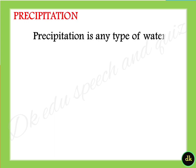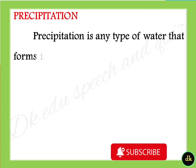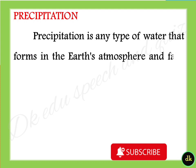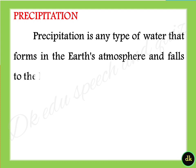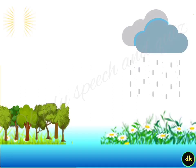Precipitation is any type of water that forms in the earth's atmosphere and falls to the earth's surface.